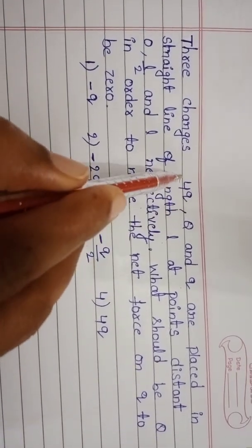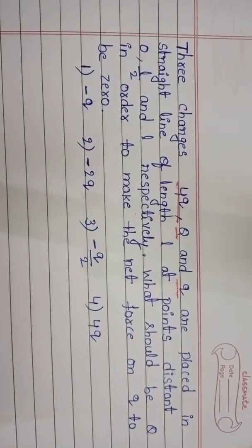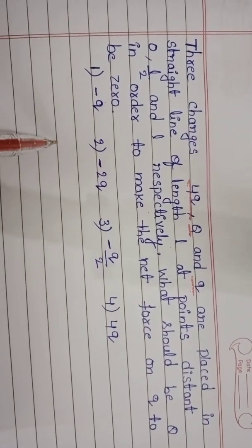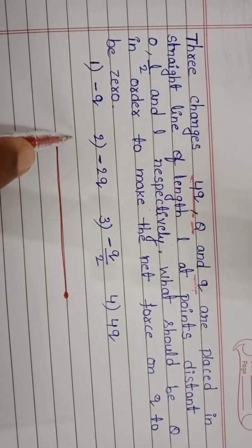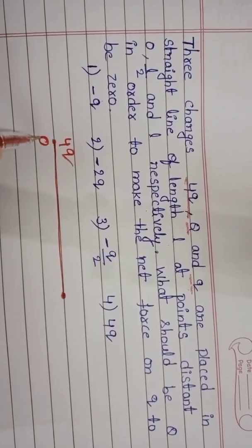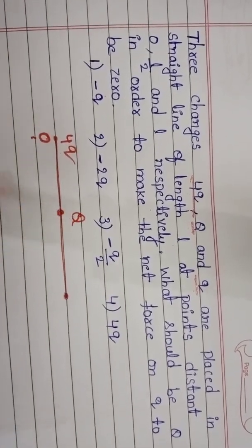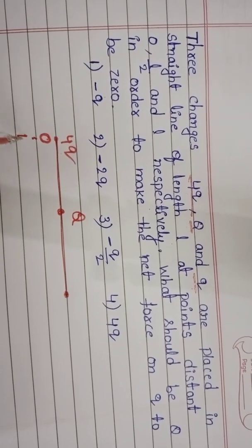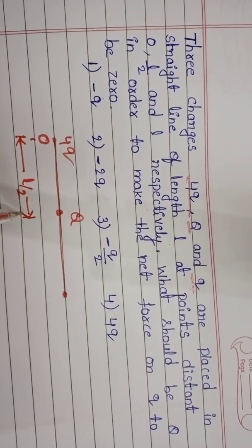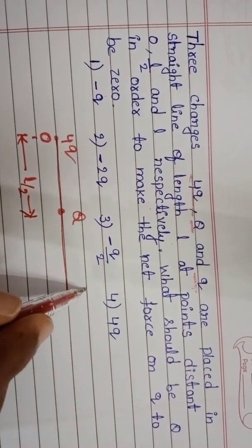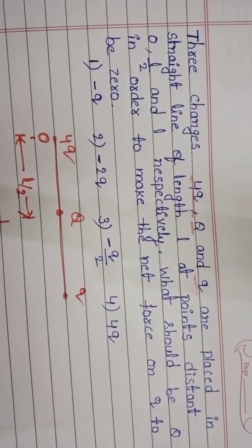Here three charges, 4Q, Q, and q are placed on a straight line of length L. The first charge 4Q is placed at 0, the second charge Q is placed at a distance L/2 from 0, and the third charge small q is placed at a distance L from 0.